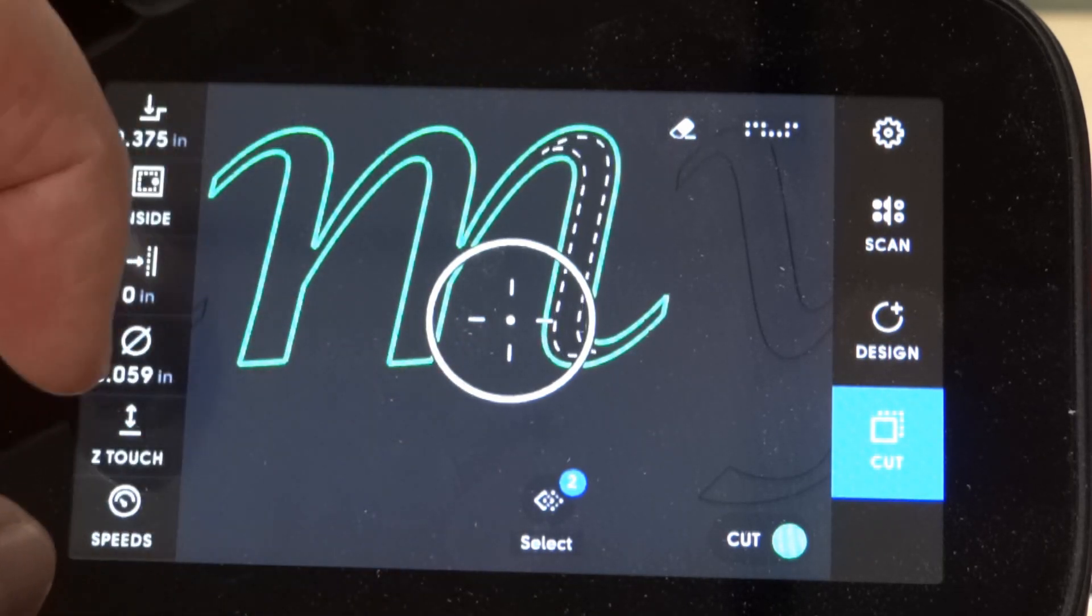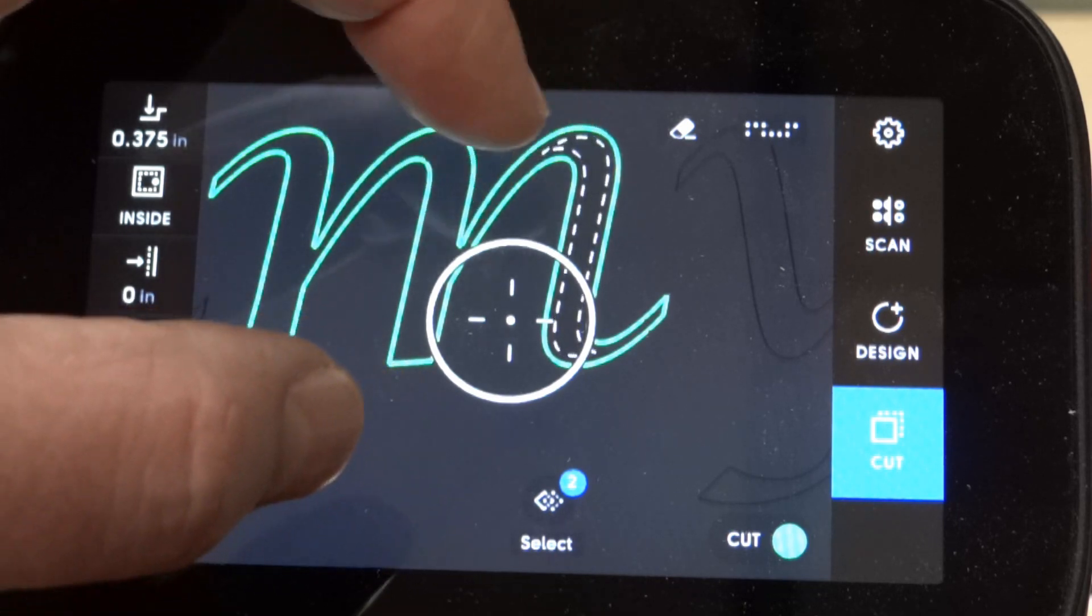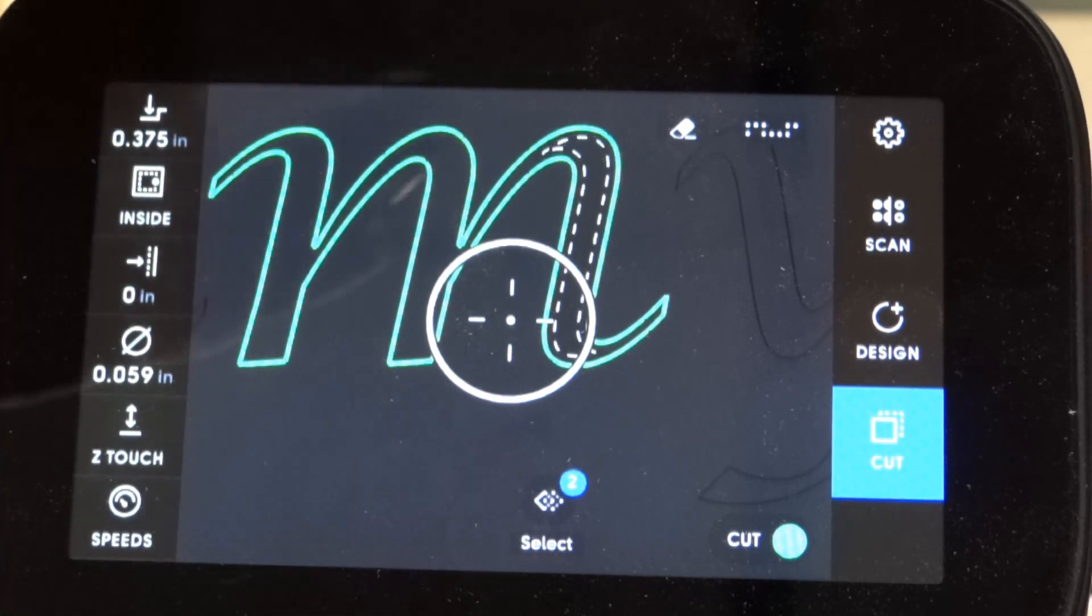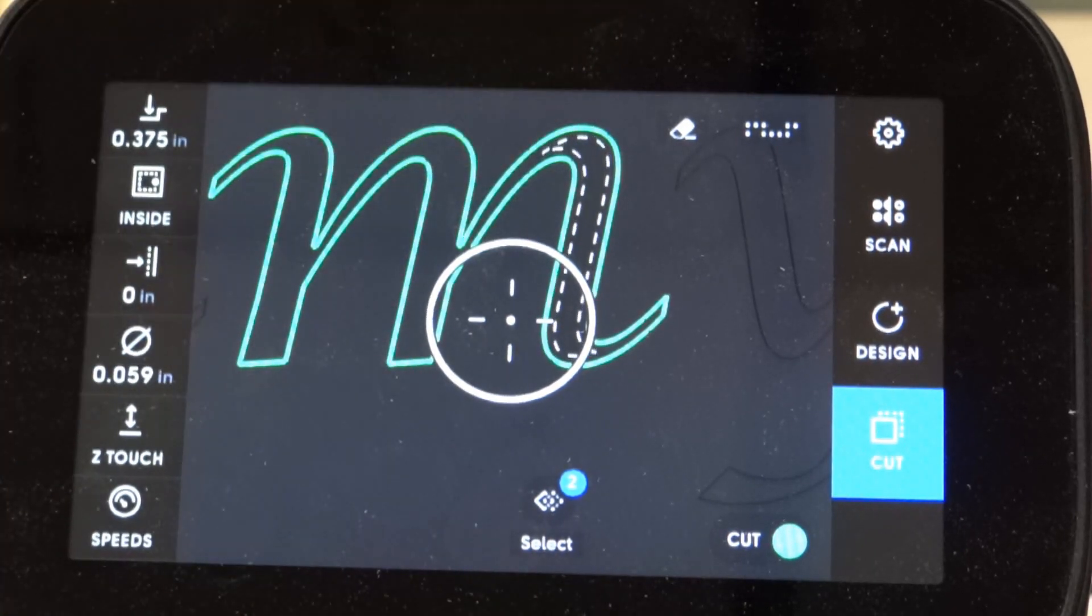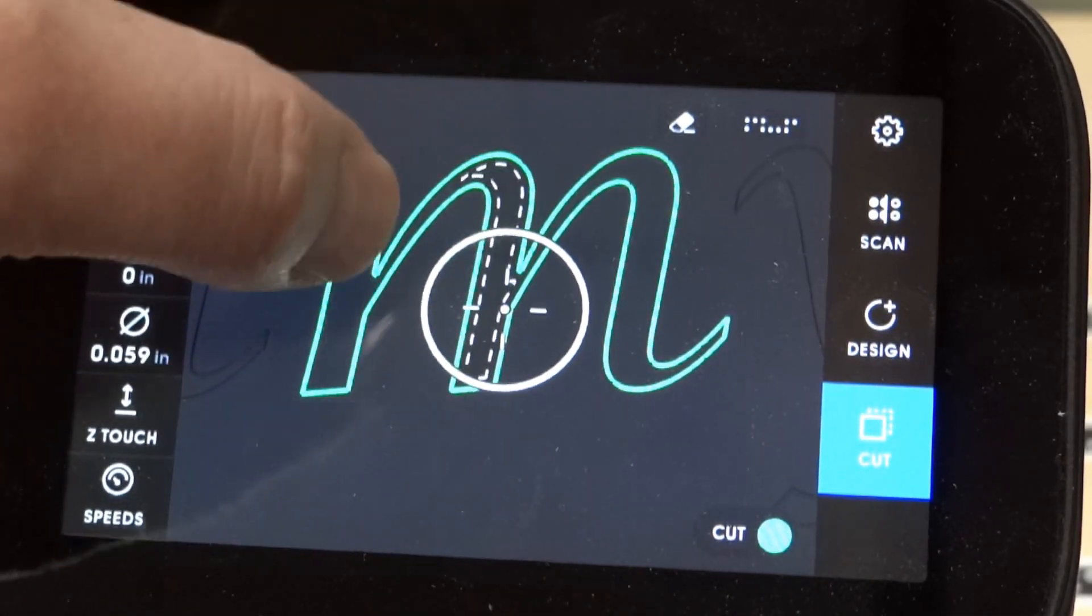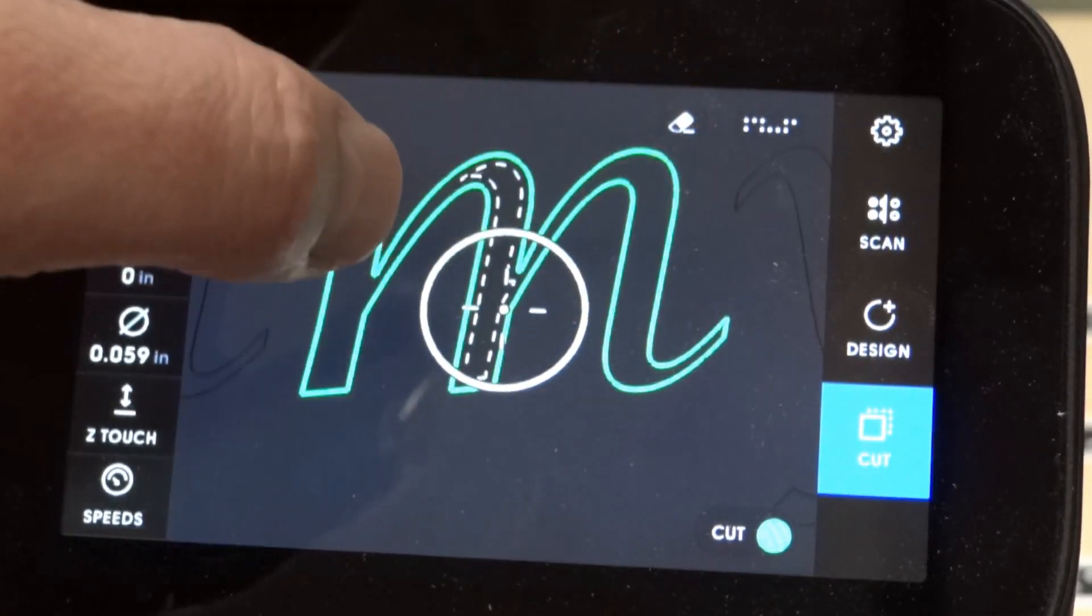So one and a half millimeters, inch and a half tall, and then these thin areas you can see that the bit just can't get there. And then if I come over here you see there's another section here so you'd end up with portions of the letter undone.